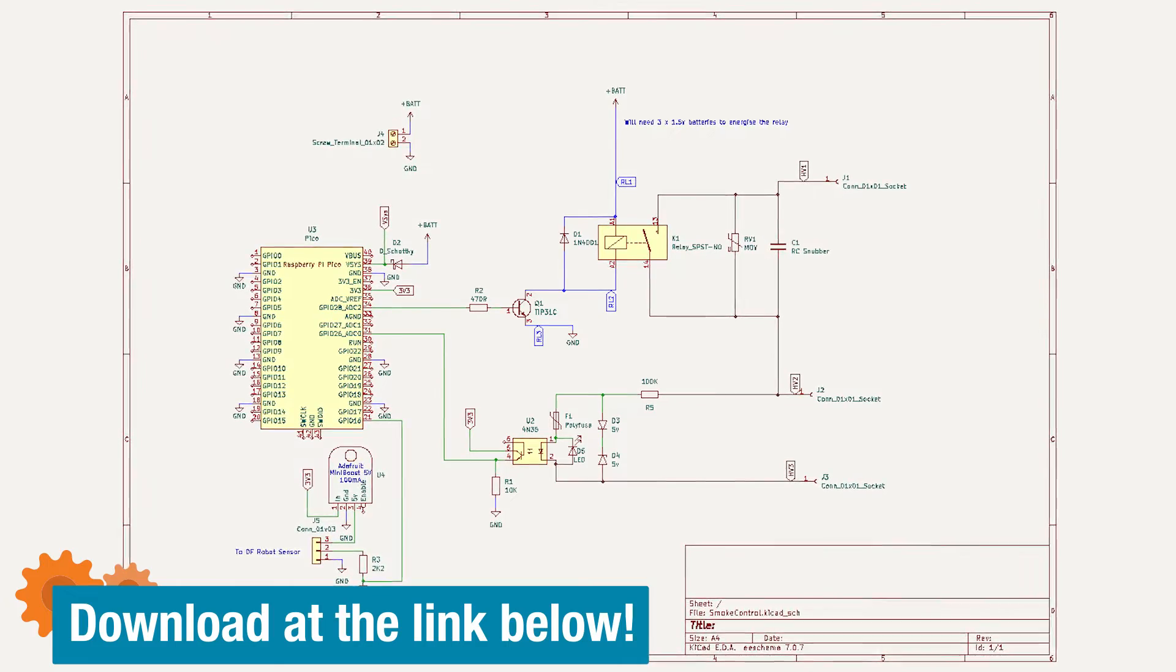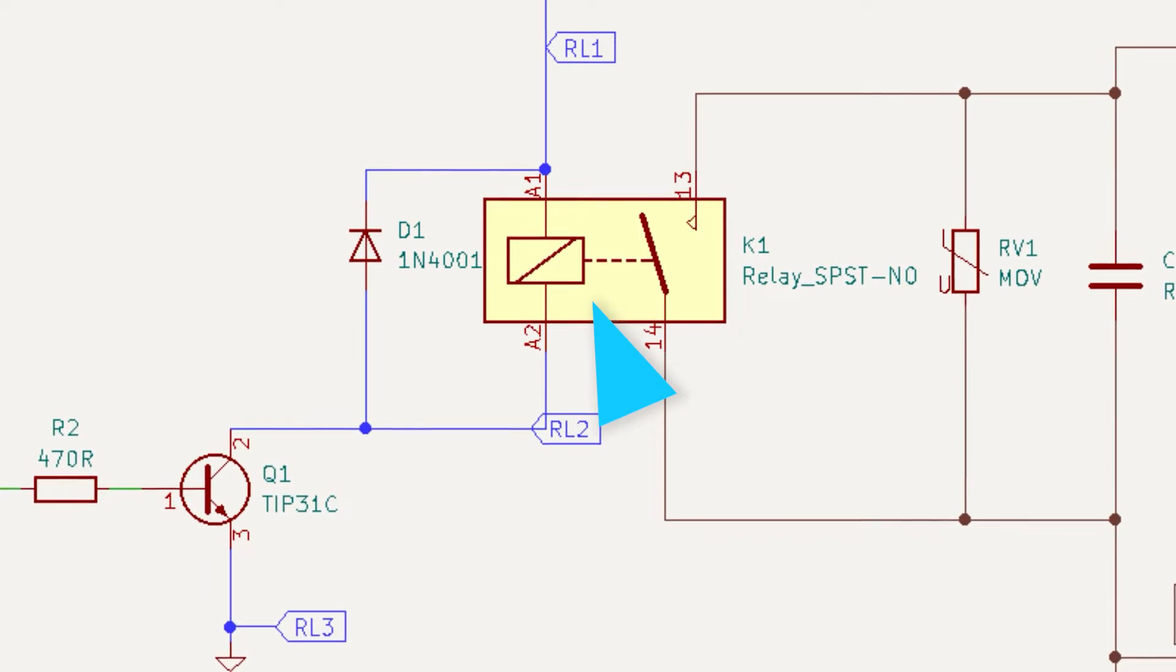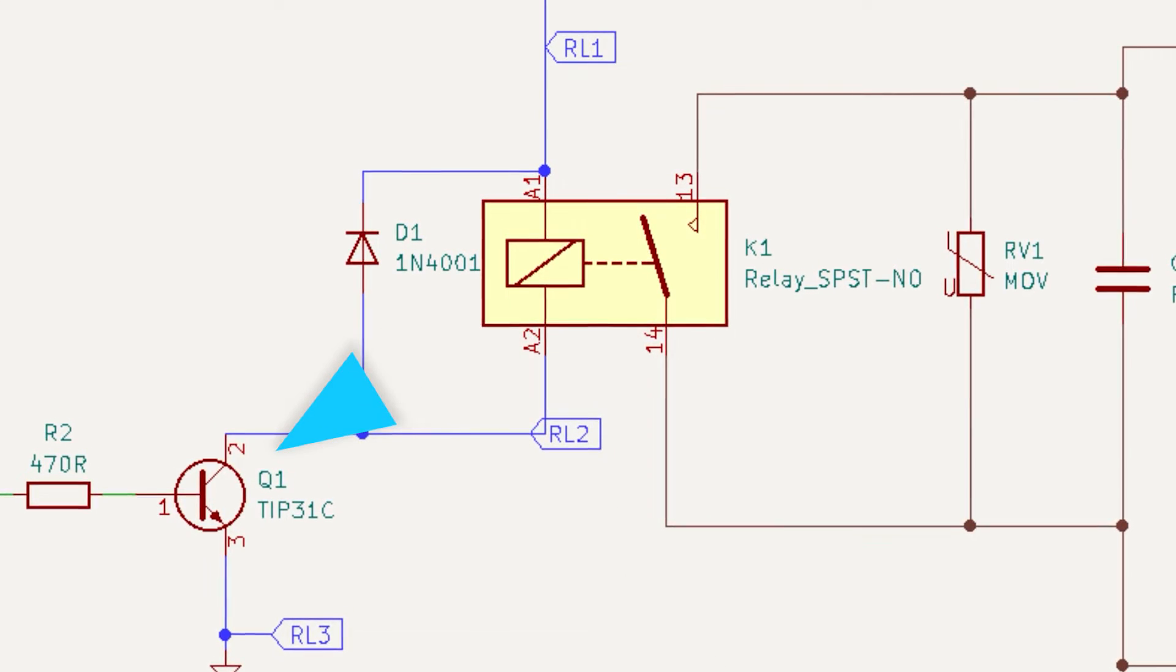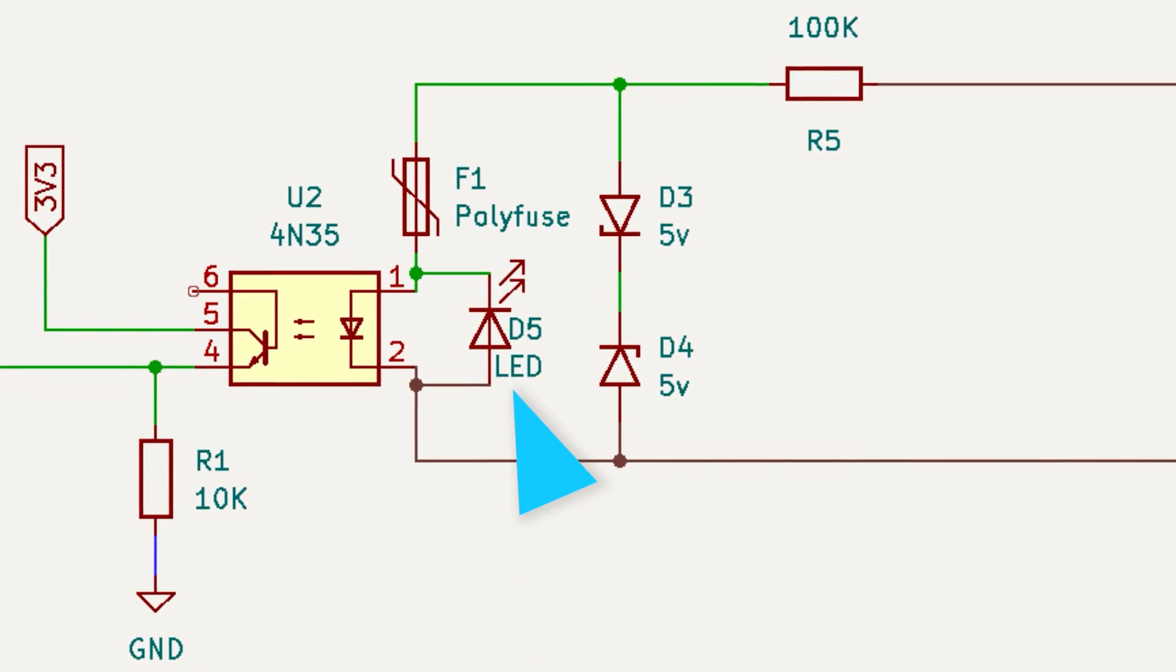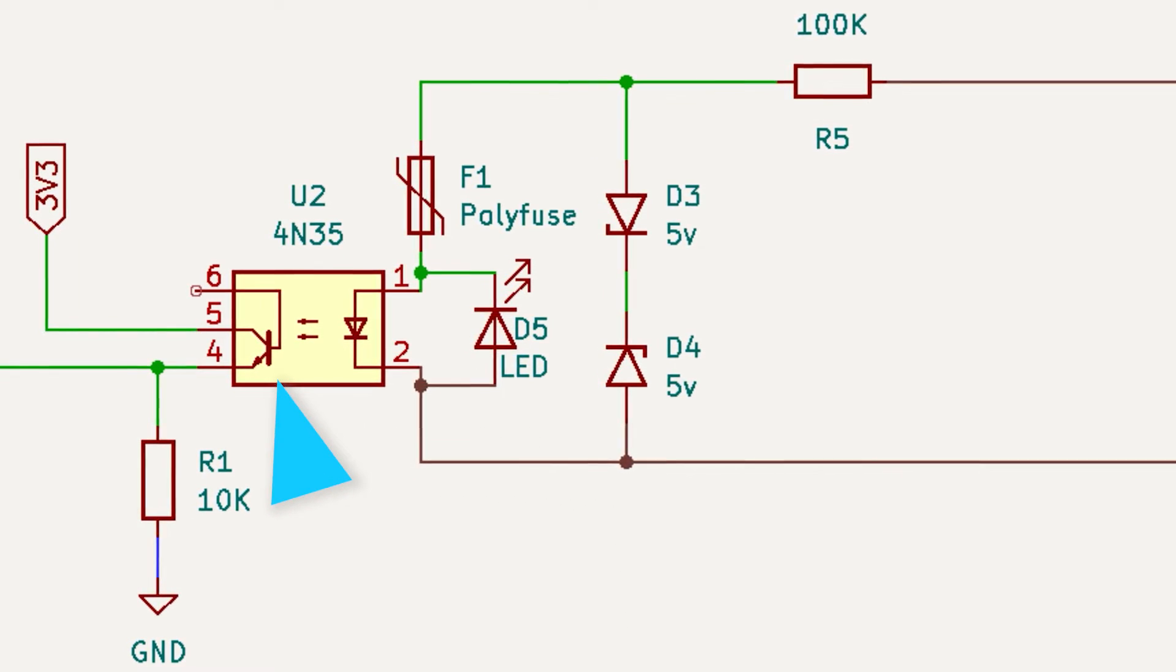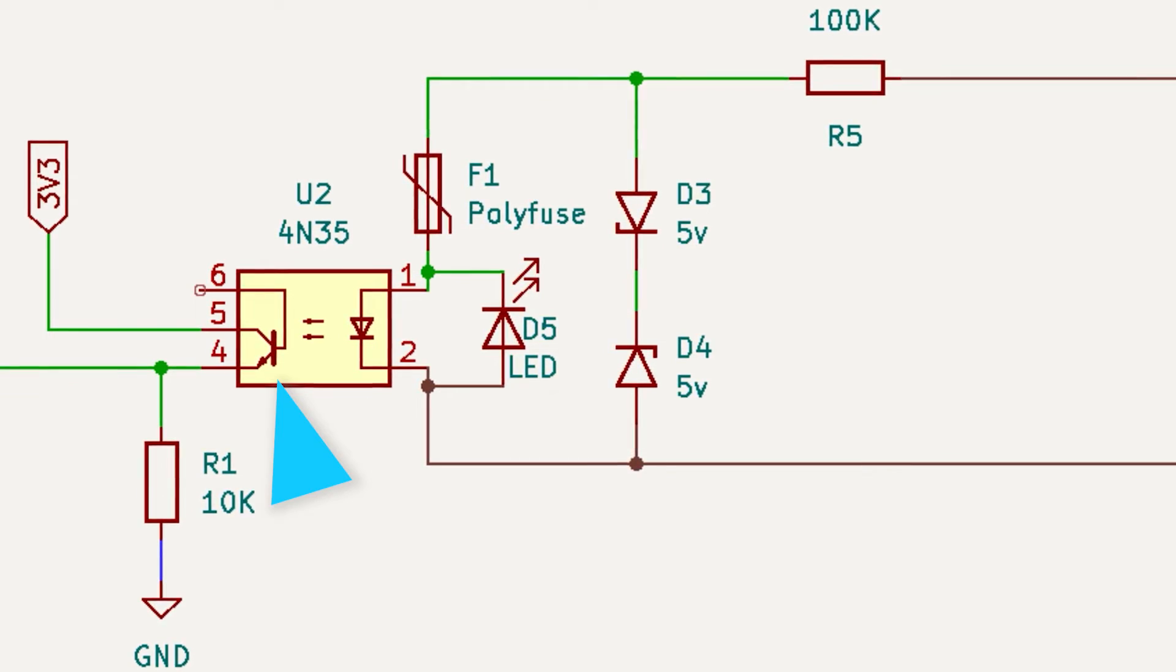To replace that remote with our own control circuit, we need to find a switch and something to replace those LEDs. For the switch, we're going to use a simple relay that can be controlled by a transistor, which in turn can be driven from our microcontroller. For the diodes, we're going to have one LED. But the second LED, we'll make that part of an opto-isolator. That means we'll get a signal from the transistor side of the opto-isolator, which we can then monitor with our microcontroller.